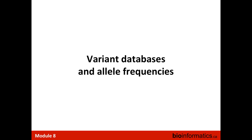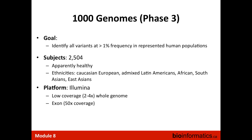The 1000 Genomes Project — now containing 2,500 individuals in its latest phase — aims to capture human genome variants occurring at more than 1% frequency across various ethnic groups including Europeans, Latin Americans, Africans, and Asians. The project covers the entire genome, though with somewhat lower coverage across the whole genome and higher coverage in exomic regions. The ESP project is dedicated to exomic regions and profiled 6,500 individuals; importantly, it doesn't include only healthy individuals — its goal is to discover cardiovascular, lung, and blood disease variants, some at less than 1% frequency.